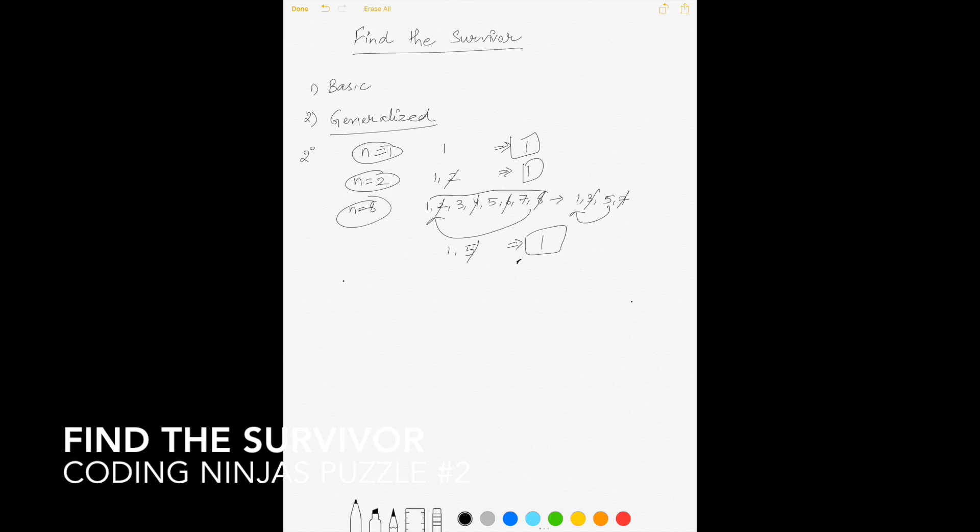So n equal to 1 is 2 to the power 0. n equal to 2 is 2 to the power 1. n equal to 8 is 2 to the power 3. And even for n equal to 64, the answer would be 1. Let's see how. We have 64 people with us. After the first round, half of them will be killed, so 32. Sword will be passed to 1.